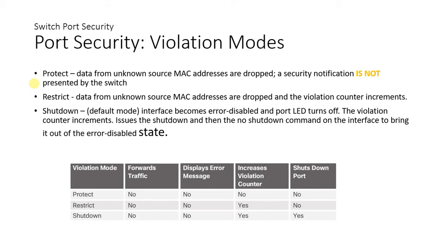Comparing the modes: protect mode does not forward traffic, does not display an error message, does not increase the violation counter, and does not shut down the port. Restrict mode increments the violation counter. Shutdown mode increments the violation counter and also puts the port into a shutdown state.